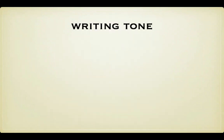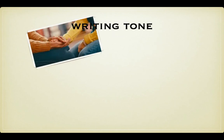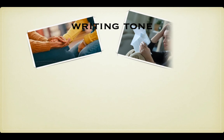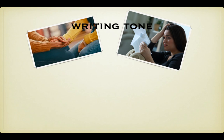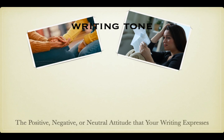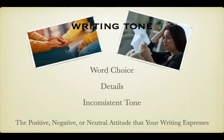Can you think of a time when you had to give a family member or a friend some bad news? You probably were very careful to choose your words, your voice inflections, your expressions, maybe even your hand gestures. Now imagine that you had to share that same news in writing. How would you communicate your feelings in words only? Because you can't use gestures or facial expressions when you write, you have to use tone. Tone is the positive, negative, or neutral attitude that your writing expresses about a topic. We'll be discussing three aspects of using tone: word choice, details, and inconsistent tone.